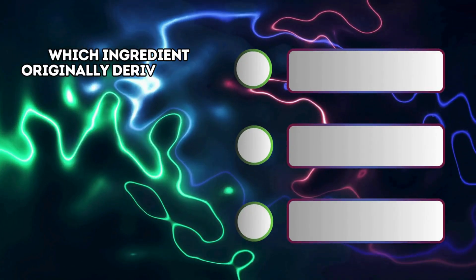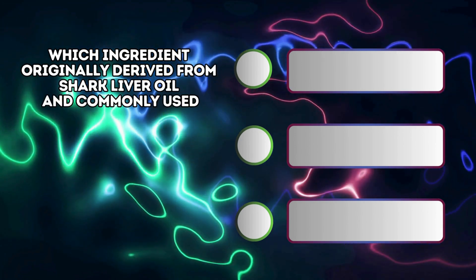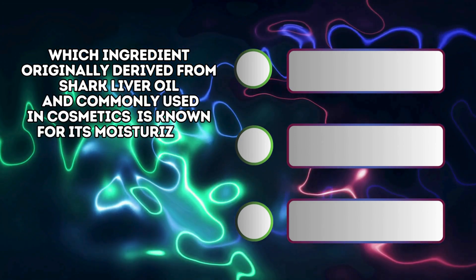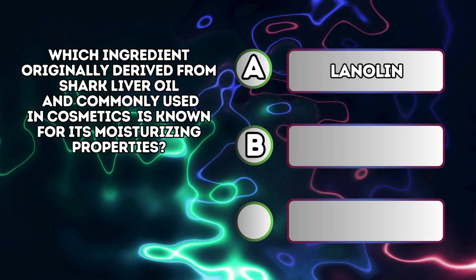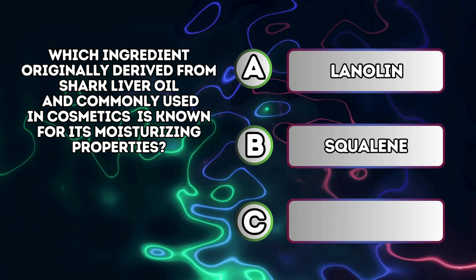Which ingredient originally derived from shark liver oil and commonly used in cosmetics is known for its moisturizing properties? A. Lanolin B. Squalene C. Glycerin